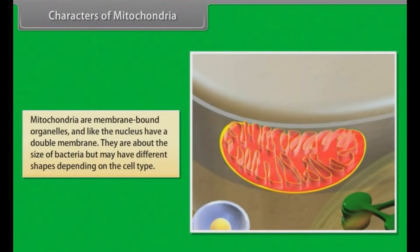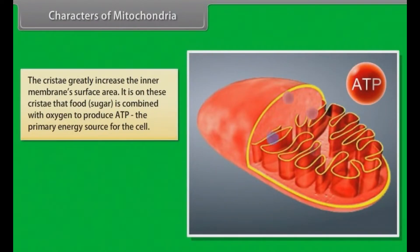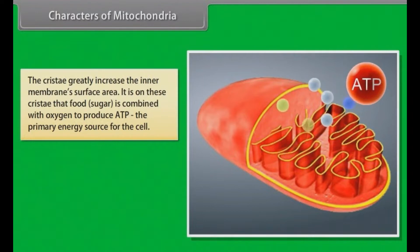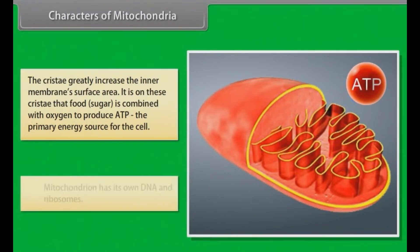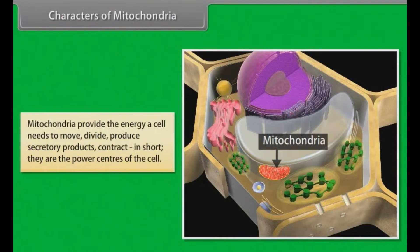Characters of mitochondria. Mitochondria are membrane-bound organelles and like the nucleus have a double membrane. They are about the size of bacteria but may have different shapes depending on the cell type. The outer membrane is fairly smooth but the inner membrane is highly convoluted forming folds called cristae. The cristae greatly increase the inner membrane's surface area. It is on these cristae that food sugar is combined with oxygen to produce ATP, the primary energy source for the cell. Mitochondria have their own DNA and ribosomes, and provide the energy a cell needs to move, divide, produce secretory products, and contract — in short, they are the power centers of the cell.